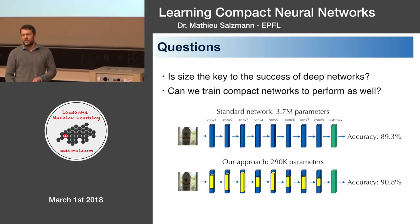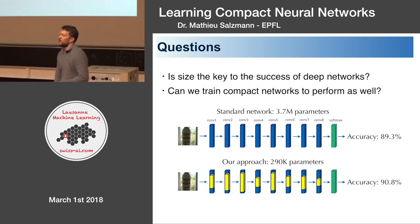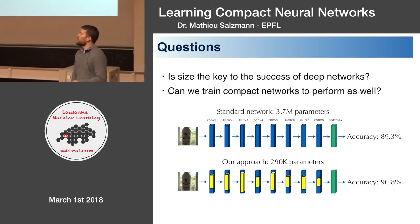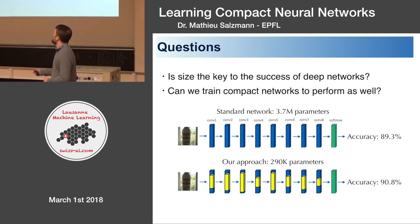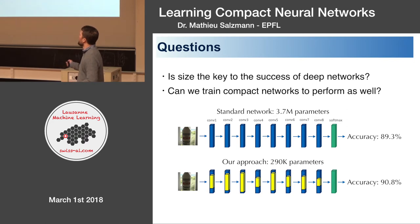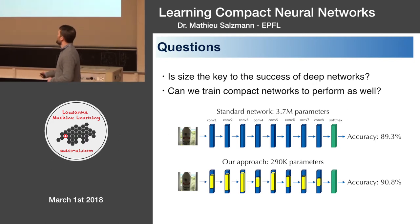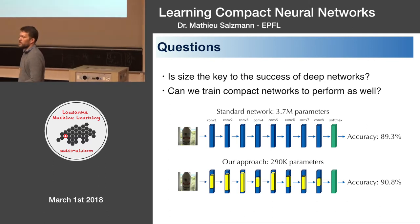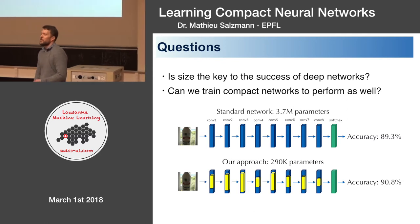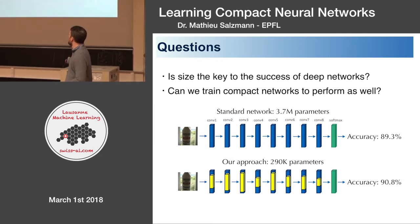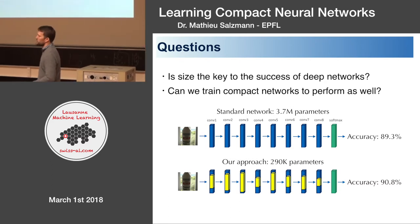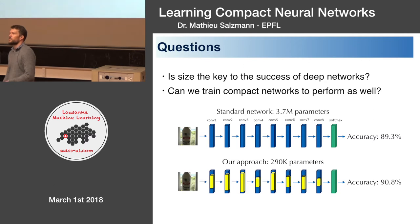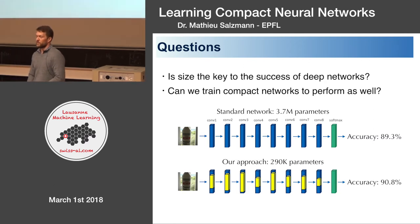Just to give you a teaser: if you have a standard network with 3.7 million parameters on something like character recognition, you get an accuracy of 89.3%. With one approach we developed with one of my collaborators, we get a network that performs just as well — or even slightly better at 90% — with only 290,000 parameters. So it's a 92% reduction in the number of parameters for the same accuracy.